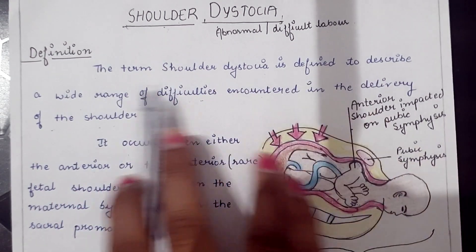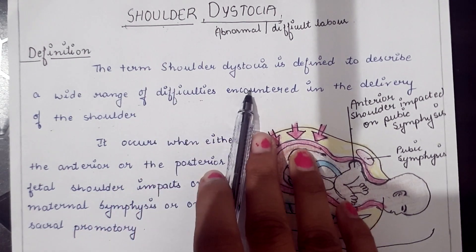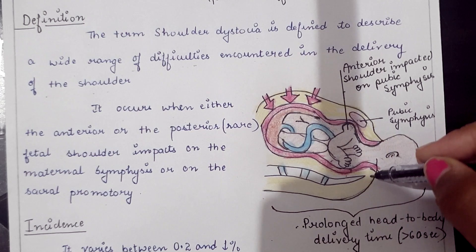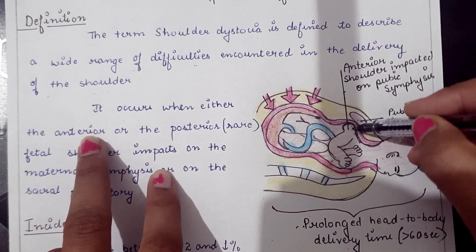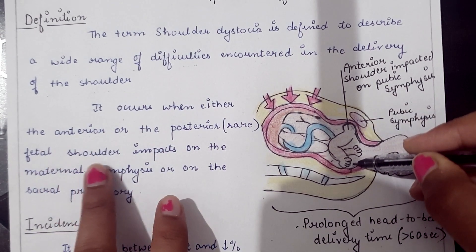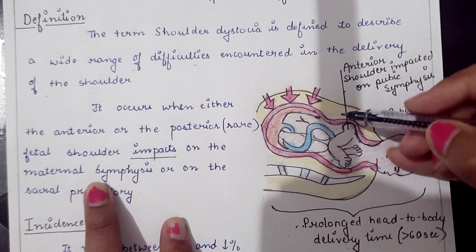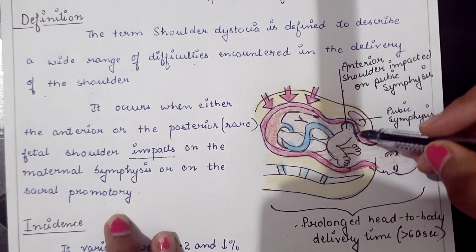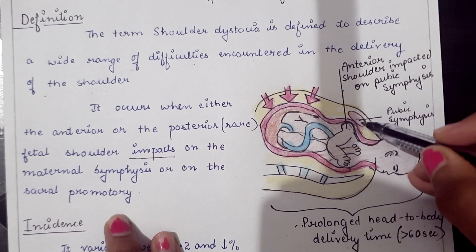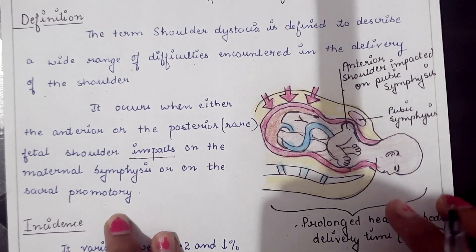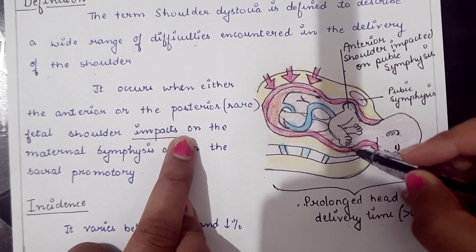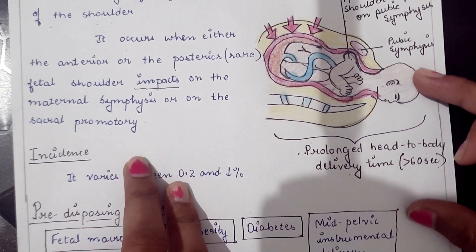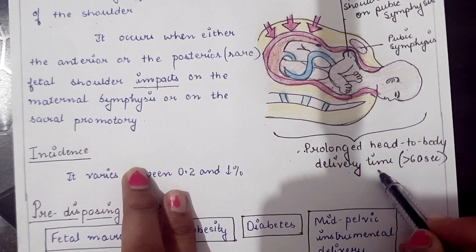The term shoulder dystocia describes a wide range of difficulties encountered during the delivery of the shoulders. As seen in the diagram, it occurs when either the anterior or the posterior fetal shoulder impacts or gets stuck behind the maternal symphysis pubis or on the sacral promontory. The impaction of the posterior fetal shoulder on the sacral promontory occurs very rarely.